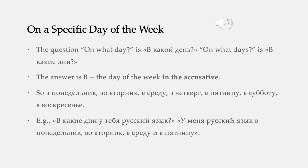To talk about something happening on a specific day of the week, we are going to use В plus the accusative. So far, you have seen В used with the prepositional to indicate location, but we can also use В plus the accusative to indicate when something happens at a certain time. So if you want to ask on what day, you say В какой день? If you want to say on what days, we put it in the plural and say В какие дни? The answer is В plus the day of the week in the accusative. A handy tip is that the question normally gives you the grammatical form you need for the answer.